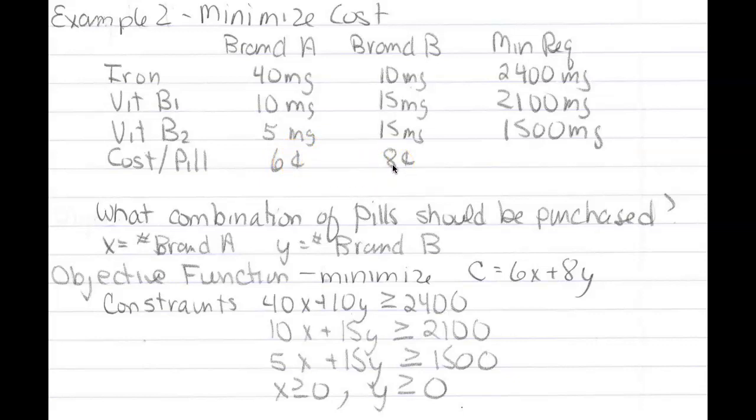Brand A contains 40 milligrams iron, 10 milligrams B1, 5 milligrams B2. Brand B contains 10 milligrams iron, 15 milligrams B1, and 15 milligrams B2.